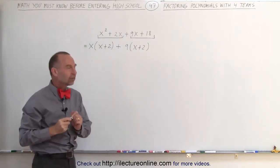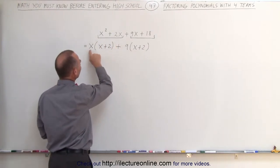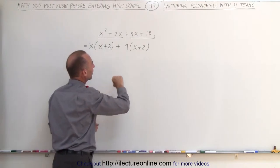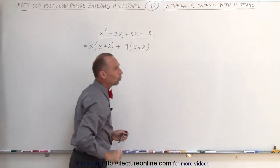To see if we did this correctly, you can multiply this back in and see if you get what you started with. x times x is x squared, x times 2 is 2x, so that's correct. 9 times x gives me 9x, 9 times 2 gives me 18, so that's correct as well.